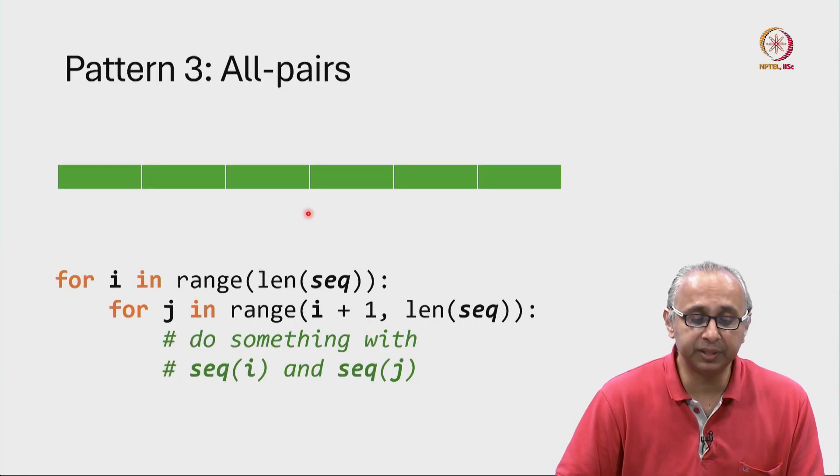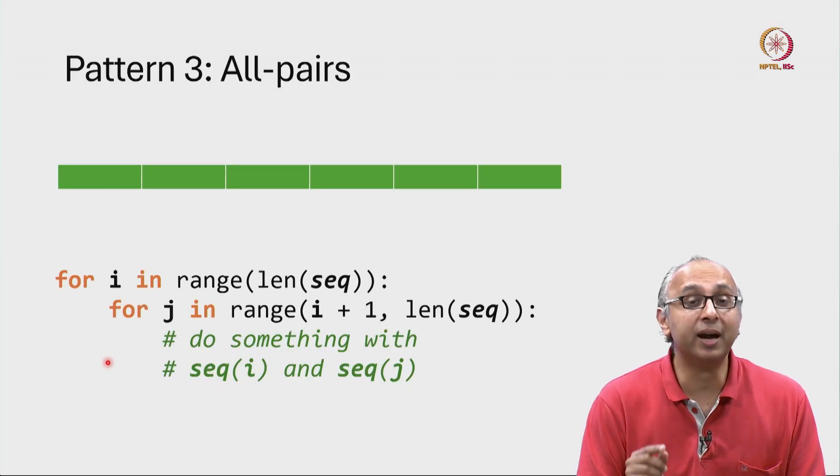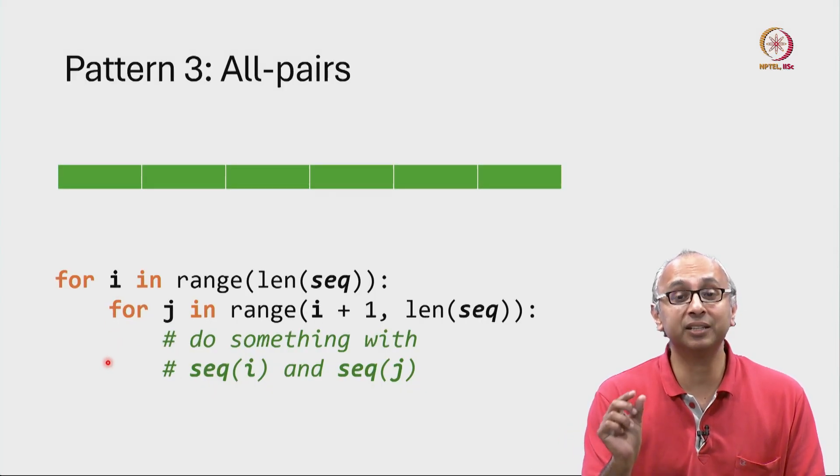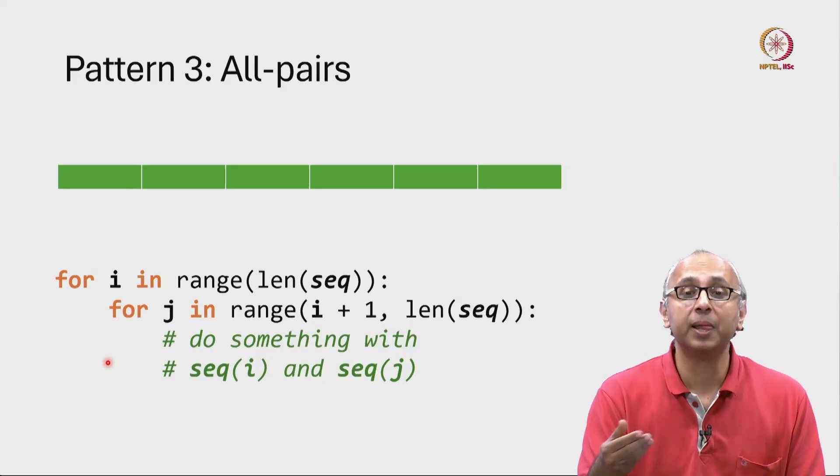So in general, given a sequence of some length, you will often see these two nested for loops. This is why I used that technical prompt, use two nested for loops, because I have seen that kind of pattern.